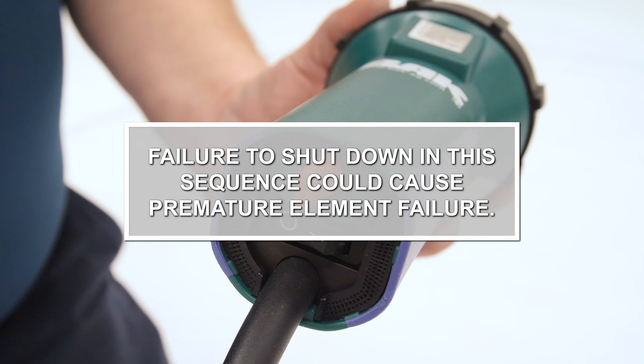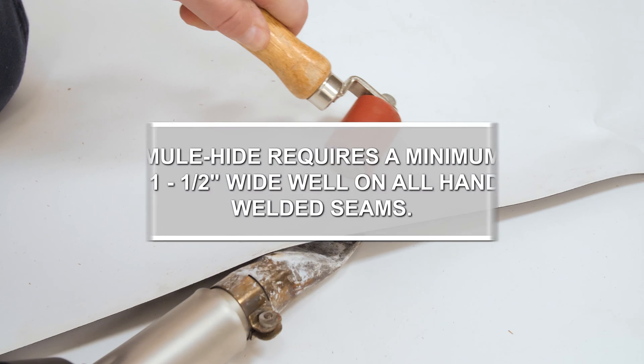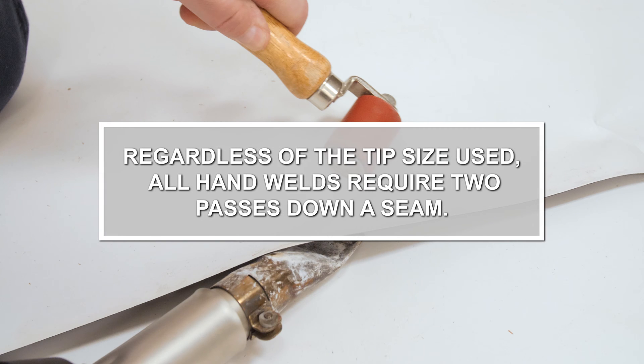Mulehide requires a minimum 1.5 inch wide weld on all hand welded seams. Regardless of the tip size used, all hand welds require two passes down a seam.